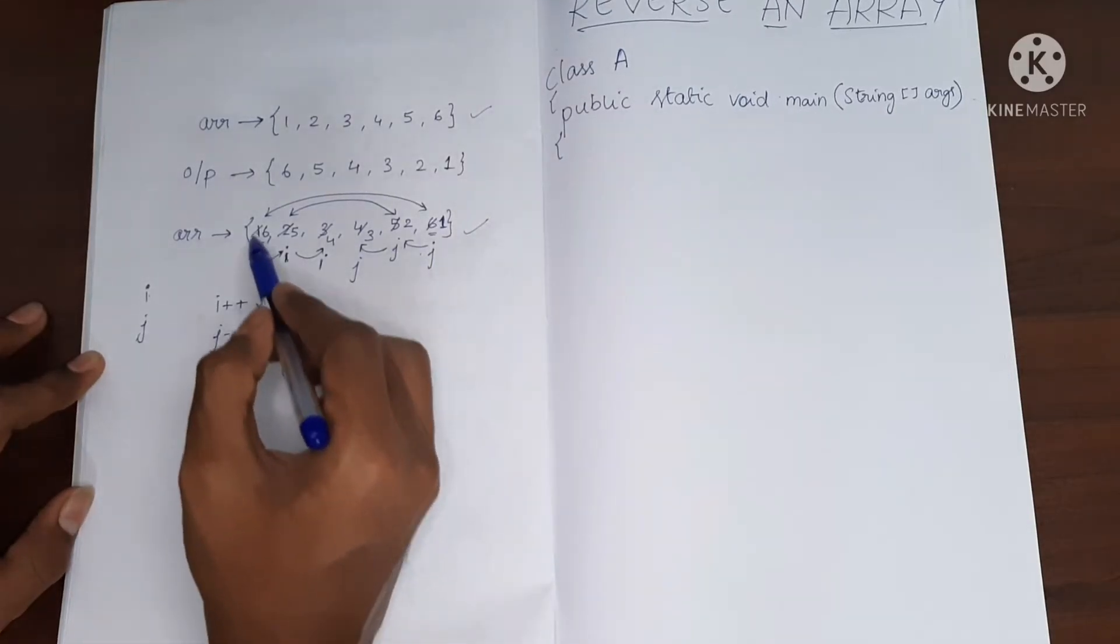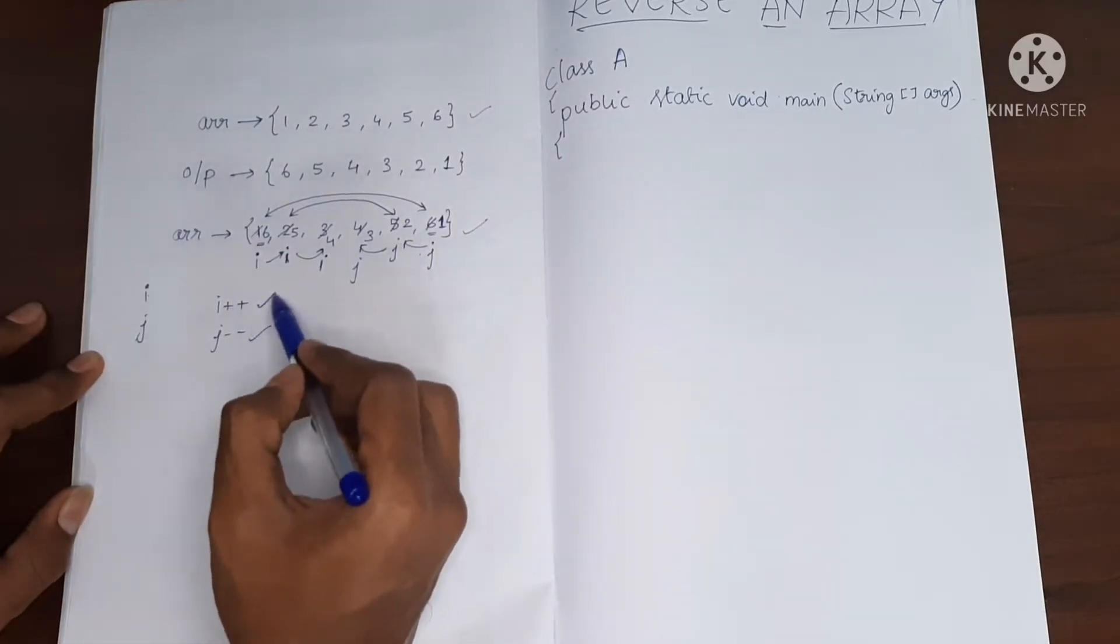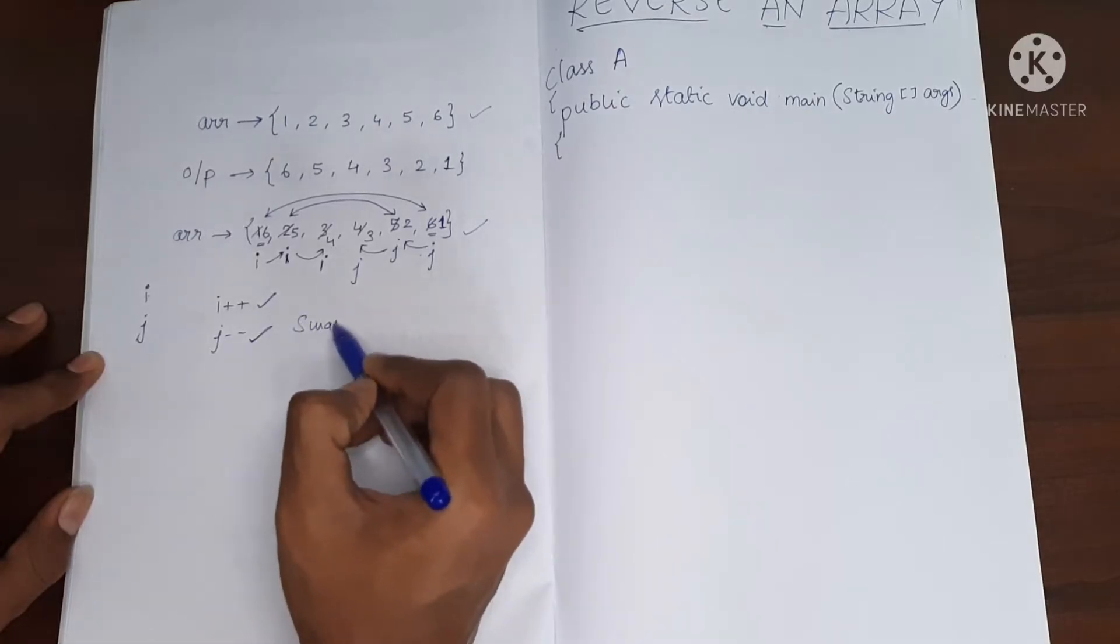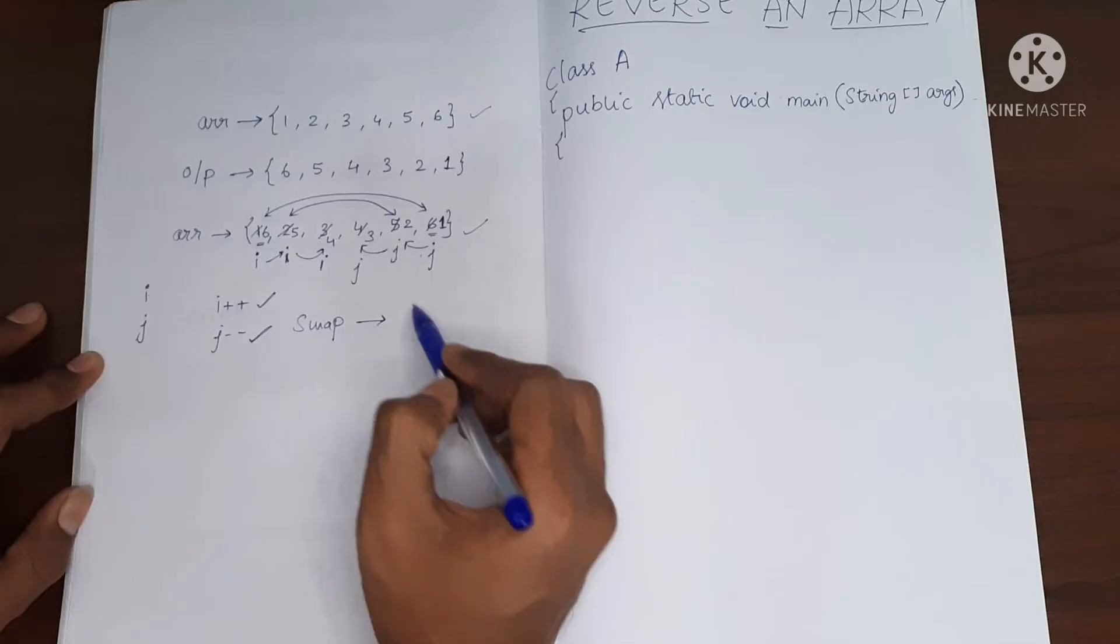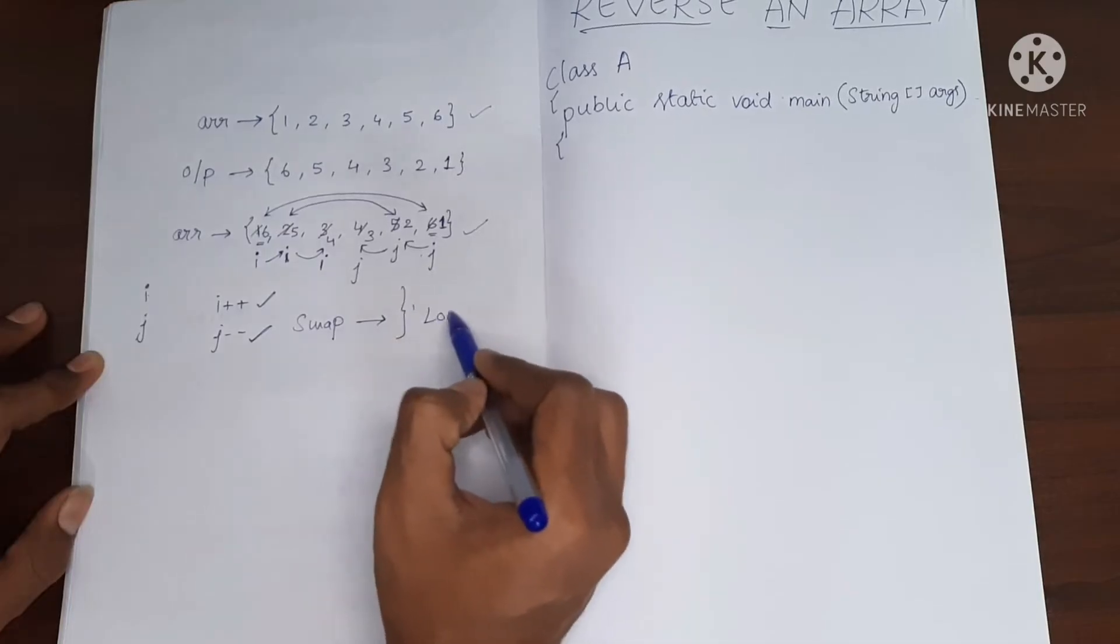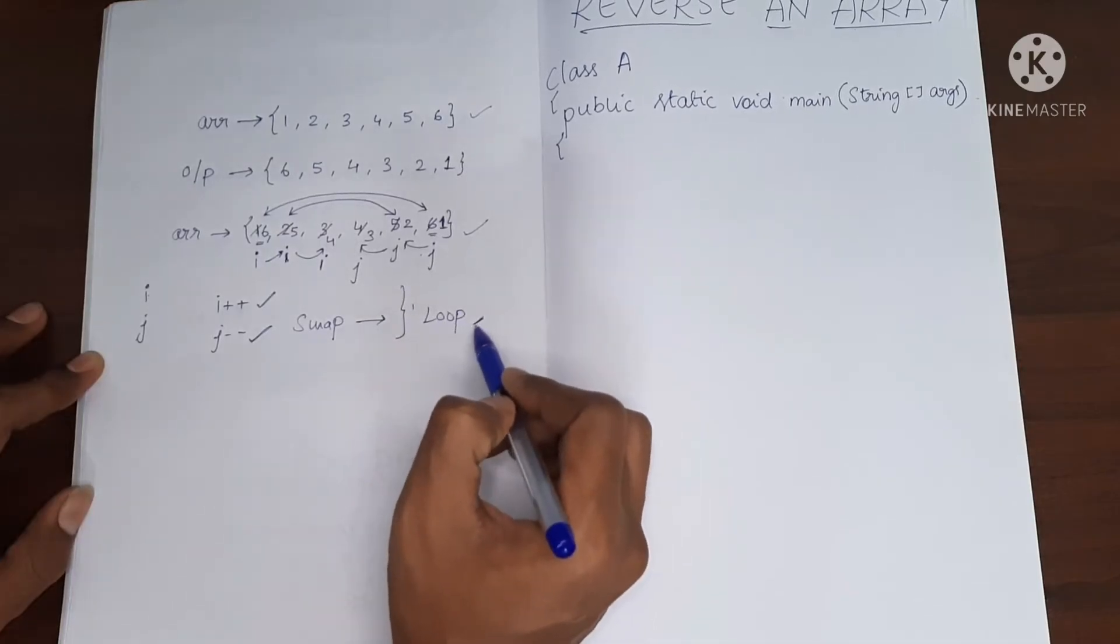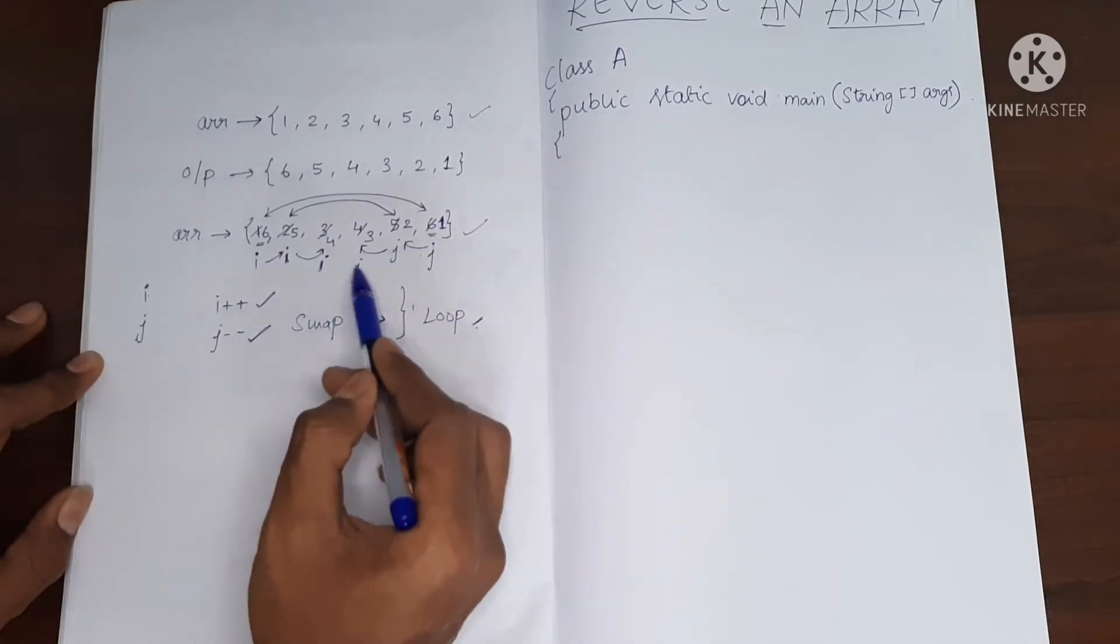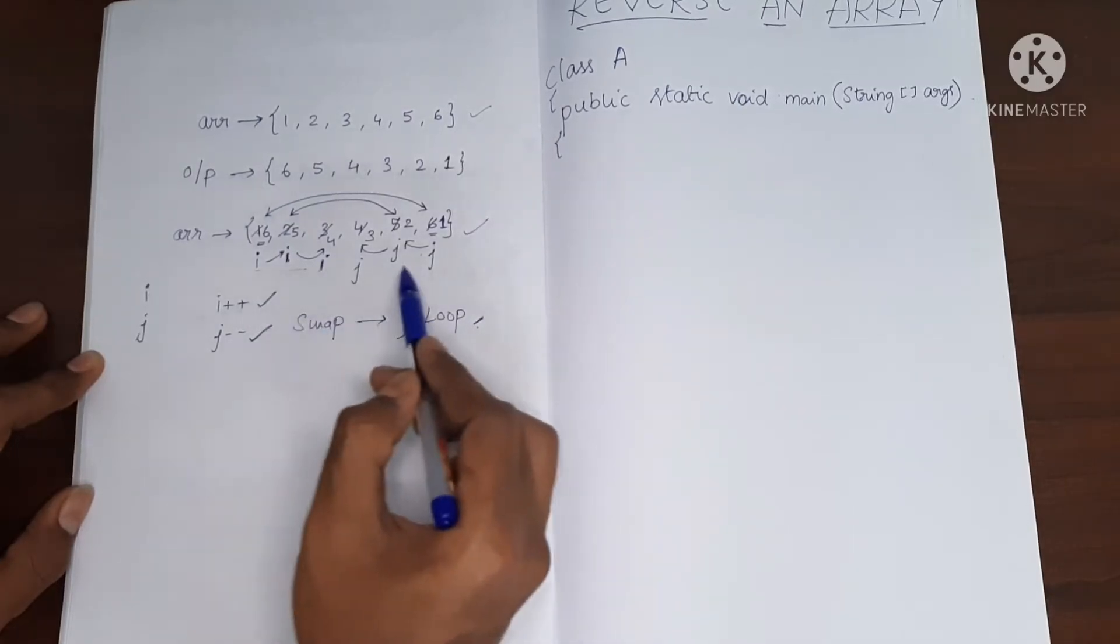So this process of incrementing i and decreasing j and then swapping the values, this will happen inside a loop. And what will be the terminating condition for the loop? We see that i is always less than j.